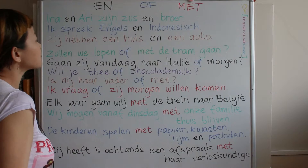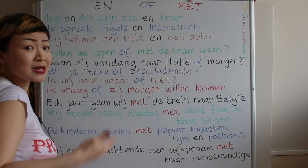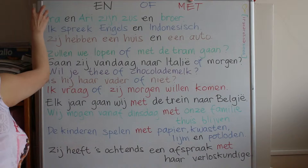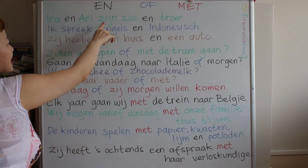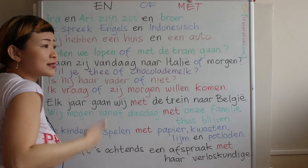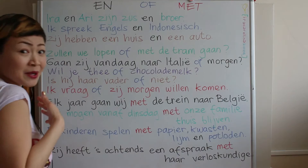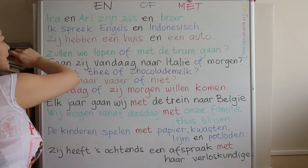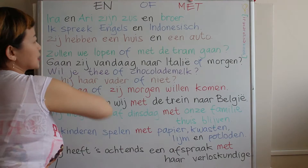The most common one for this case is 'broer' and 'zus'. Of course, you have to put Ari's name first and then Ira's name — Ari and Ira zijn broer and zus. But in this case, this is also not wrong: I want to put my name first — Ira and Ari, so then it's zus and broer — sister and brother.